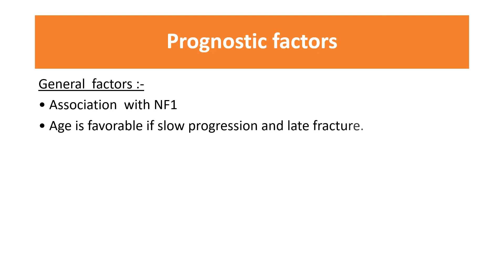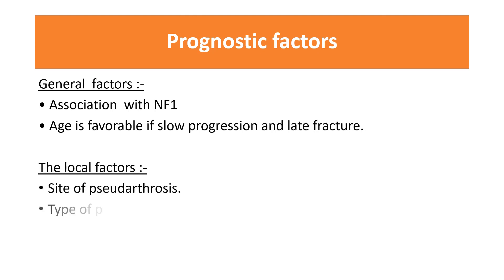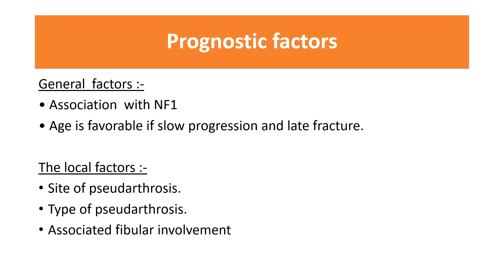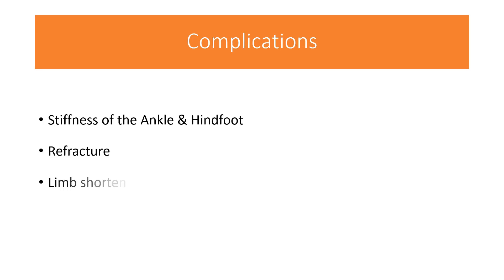Prognostic factors affecting union include general factors — such as association with neurofibromatosis type 1, which has a negative prognostic value — and age, which is favorable if slow progression and late fracture presentation occurs. Local factors include the site of pseudarthrosis: the more distal the site, the worse the prognosis. Boyd's Type 2 has the poorest prognosis, and fibular involvement also carries a negative prognostic value. Complications may include ankle and hindfoot stiffness, refracture, significant leg length discrepancy, and valgus ankle deformity.